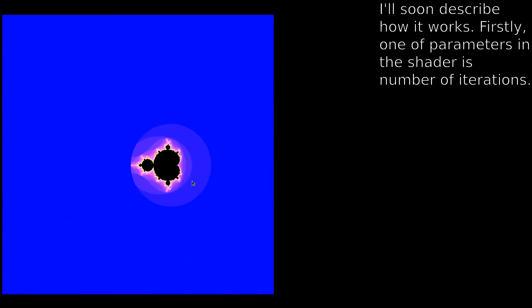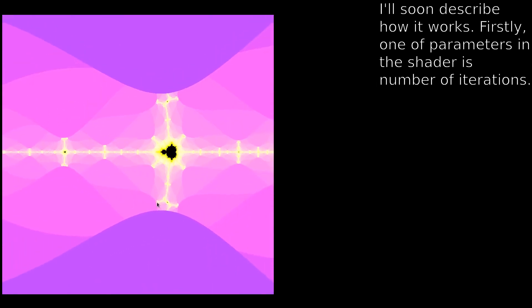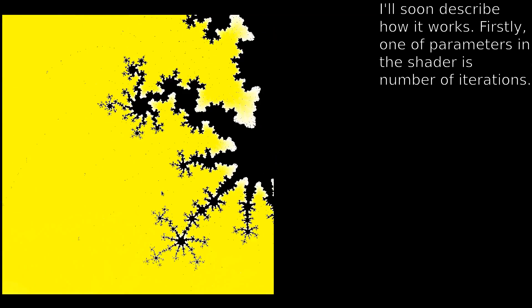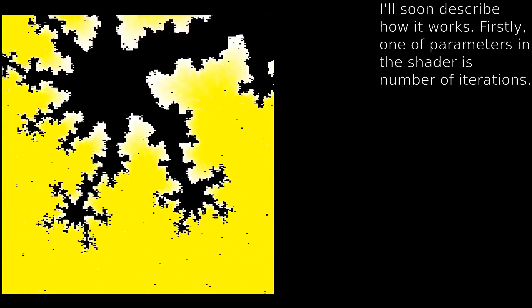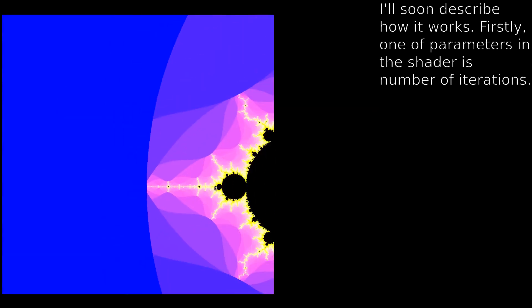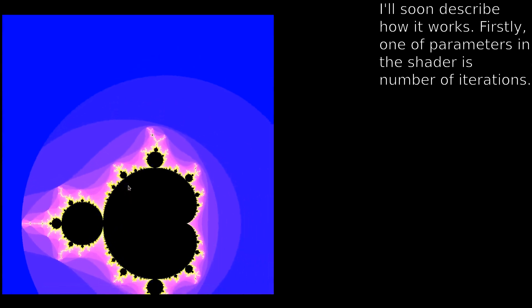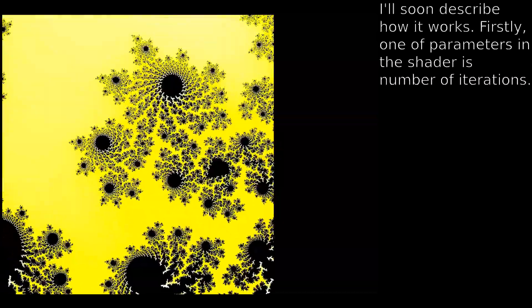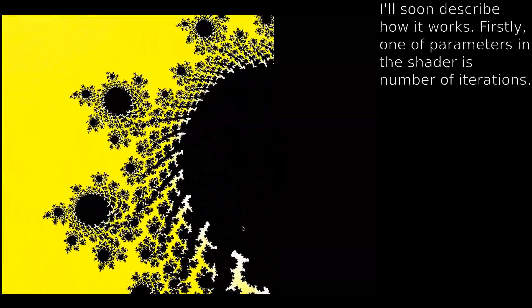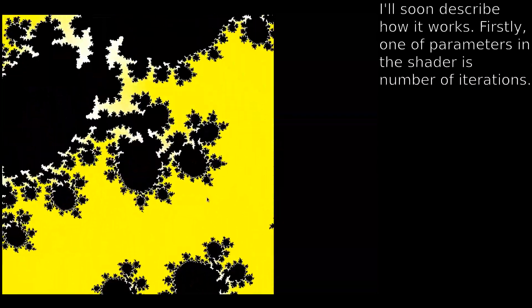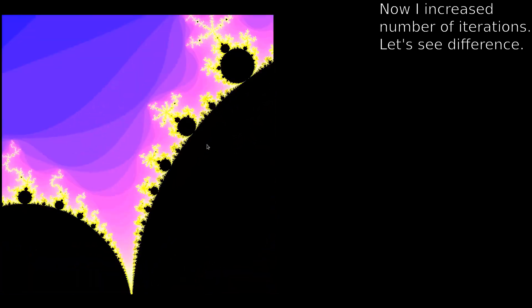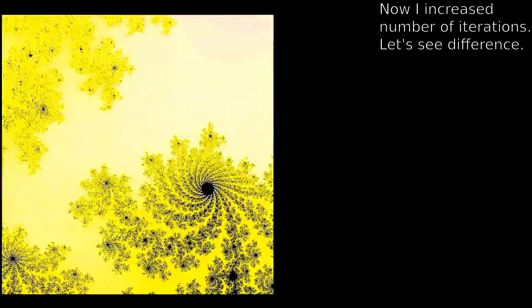I'll soon describe how it works. Firstly, one of the parameters in the shader is number of iterations. Now I increased number of iterations. Let's see the difference — it became more clear.